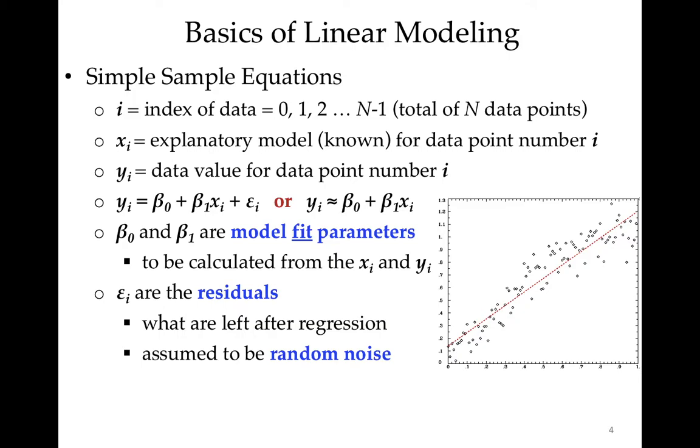There's some very simple equations where we say we have some measurement for a bunch of subjects indexed by i - subject number zero, one, and so on - and we say we have some explanatory model for data point number i. Let's say that's the subject's age, just to be simple. Subject number i is x years old, and y sub i is some value measured from the subject, say the subject's height.